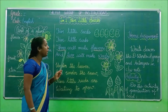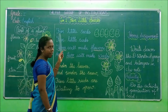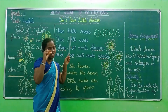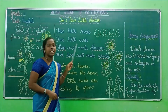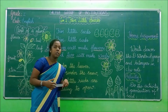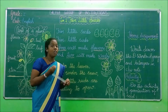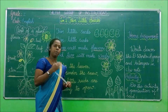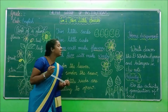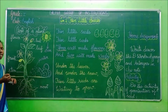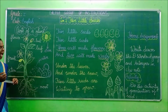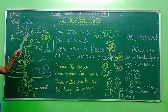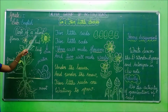What is the name of the poem? Five Little Seeds. We are going to learn about five little seeds. Before that, now we will see the parts of the plant. Parts of the plant.